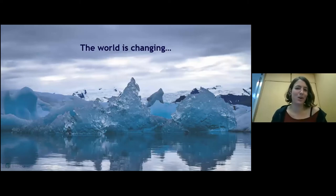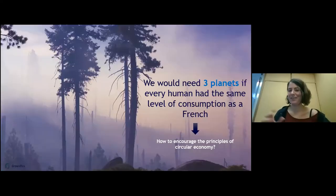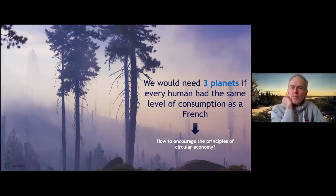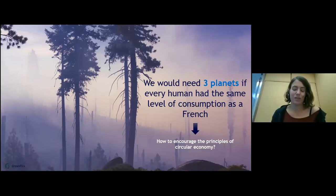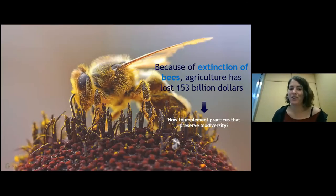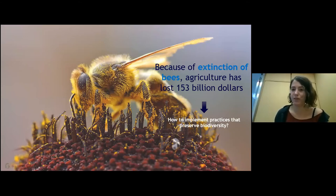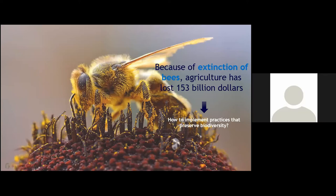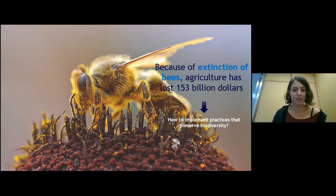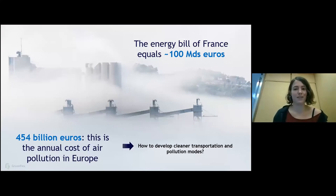You all know the world is changing. We are consuming resources equivalent to three planets — we would need three planets to answer our needs, so we need to encourage circular economy. You all know about the extinction of bees and insects, which is an amazing cost for agriculture, since our food system depends heavily on these insects. So we need to protect biodiversity.